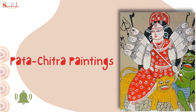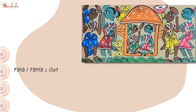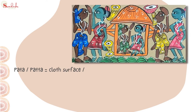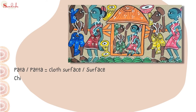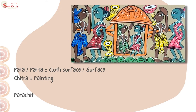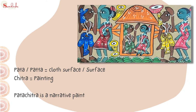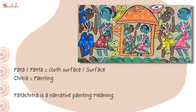Today's topic is on Pato Chitra paintings. Pato means cloth surface, or simply a surface, and Chitra means painting. Pato Chitra is a narrative painting, meaning each painting depicts a story.